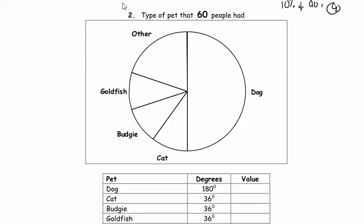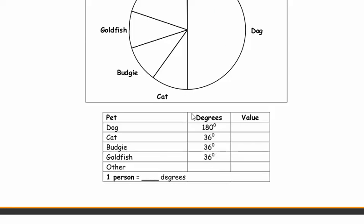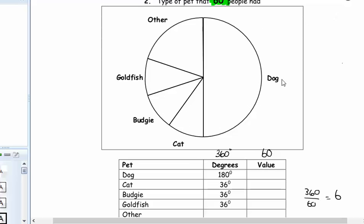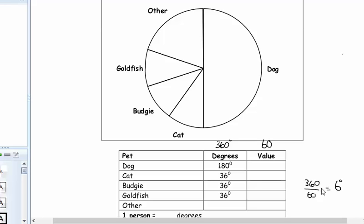Moving on to this one — the important number here is 60 people, and you've got similar, nice and easy values. The degrees are given to you at this stage. What do all the degrees have to add up to? 360. And what do all the values have to add up to in this case? 60. So 360 shared between 60 people — each person is 6 degrees.